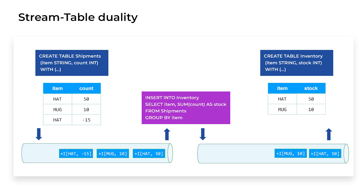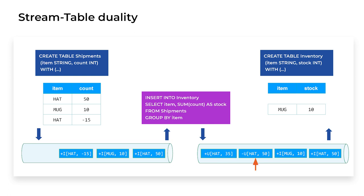Because this SQL statement is doing grouping, the result is an updating table rather than an append-only table. In response to processing the event that ships out 15 hats, the query produces a pair of update events. First, an UpdateBefore event retracts the current result showing 50 hats in inventory. Second, an UpdateAfter event replaces that old entry with a new one showing 35 hats. Exactly how the sink performs this retraction and update depends on which sink connector and format is used — for example, a JDBC database table or a Kafka topic written in a changelog format such as Debezium. Conceptually, the UpdateBefore removes the old entry and the UpdateAfter inserts the updated result.